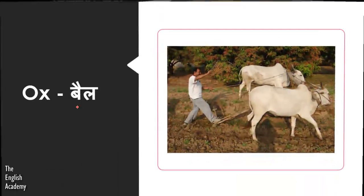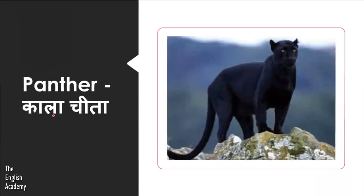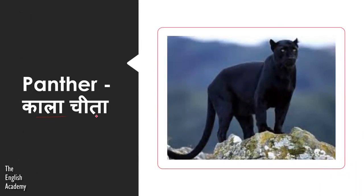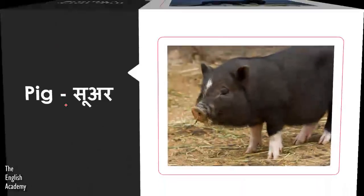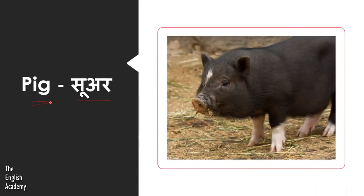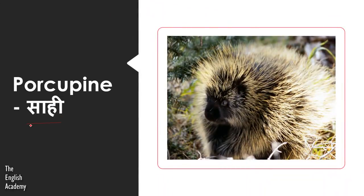The next animal is Bear, which we call Ox. Then we have Kala Cheeta, which is called Panther. The next animal is Suwar, which we know as Pig. Then there is Sahi — Sahi we call Porcupine.